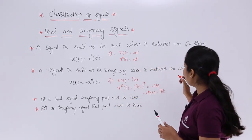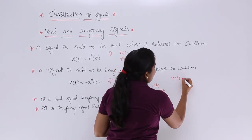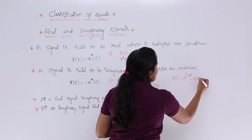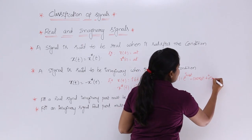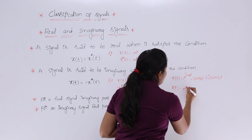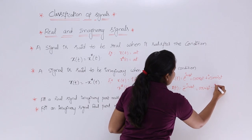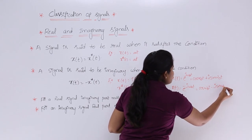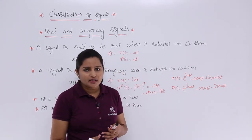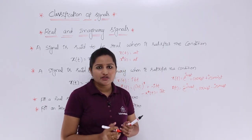For example, if you have e^(jω₀t), you know that this is equivalent to cos(ω₀t) + j·sin(ω₀t). Another signal is e^(-jω₀t), which is equivalent to cos(ω₀t) - j·sin(ω₀t). If you consider these two signals, they are not said to be real or imaginary — they are complex signals, meaning they have both a real part and an imaginary part.